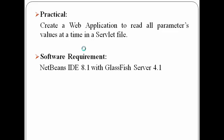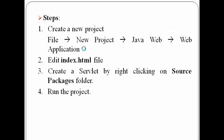In this video, I'll be creating a web application to read all parameter values at a time in a servlet file. For doing so, I'll be making use of enumeration. The software I'll be using is NetBeans IDE 8.1 with GlassFish server 4.1. These are the steps for creating this web application: first, creating a new project, then editing the index.html file, then creating a servlet file, and finally running the project.